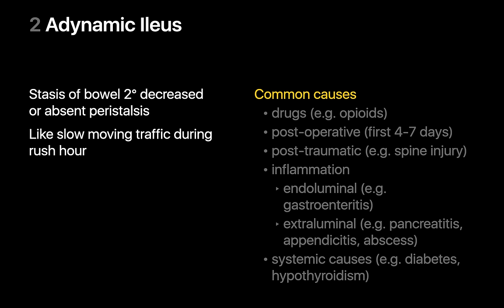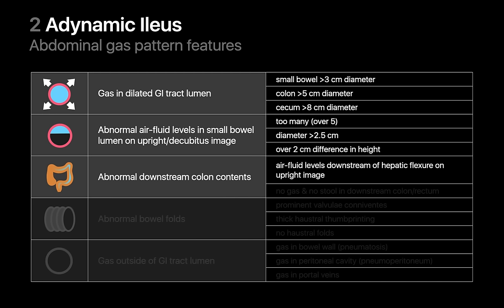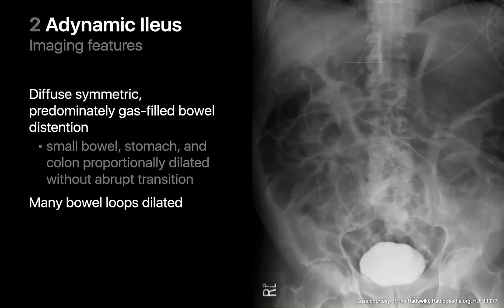The x-ray findings of adynamic ileus include gas or air-fluid levels in distended small bowel, cecum, and colon, but the distension will usually be diffuse and extend all the way to the rectum. In this example of adynamic ileus, the entire GI tract is gas-filled and diffusely distended, including the sigmoid colon and rectum, without a difference in severity of distension upstream versus downstream — unlike mechanical bowel obstructions, where the downstream colon is collapsed and imperceptible while the upstream GI tract is distended.